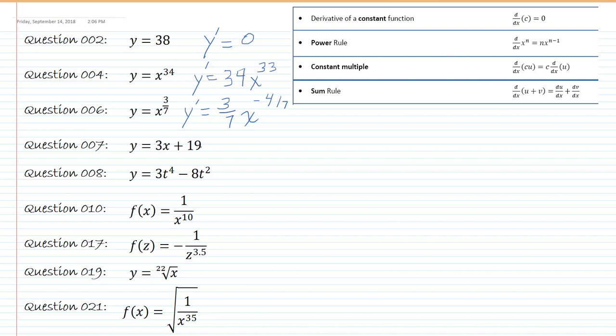Now next, this you could say is the sum rule, or you can look at each one of these individually. The derivative of 3x is just 3, and then 19 is a constant, so it goes away.